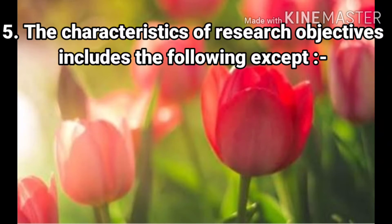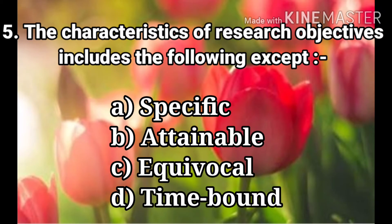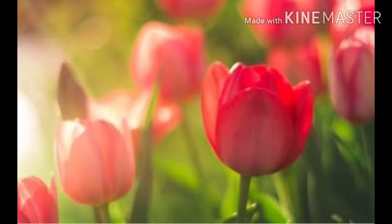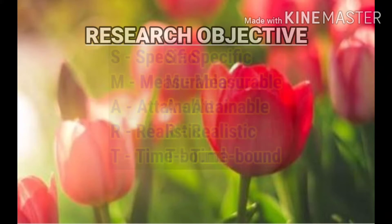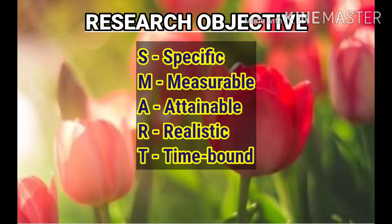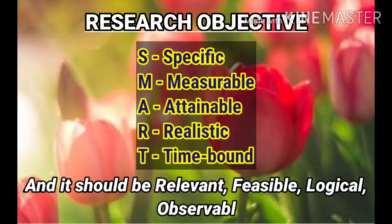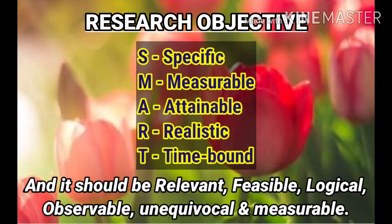Question 5: The characteristics of research objectives include the following except. The options are Specific, Attainable, Equivocal, and Time-bound. The answer is Equivocal. Research objectives should be SMART: S — Specific, M — Measurable, A — Attainable, R — Realistic, T — Time-bound. They should also be Relevant, Feasible, Logical, Observable, Unequivocal, and Measurable.